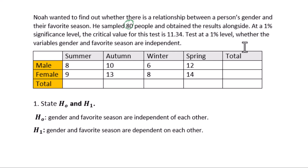At a 1% significance level, the critical value for this test is 11.34. Test at a 1% level whether the variables gender and favorite season are independent.